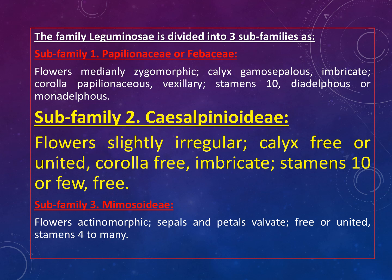The characteristic features of this family are: flowers are slightly irregular or zygomorphic, and the calyx are free — polysepulous condition — or calyx are united. Both conditions are present. Corolla is free, that is polypetalous condition, with imbricate aestivation, and stamens are ten or few, and all are free, that is polyandrous condition.